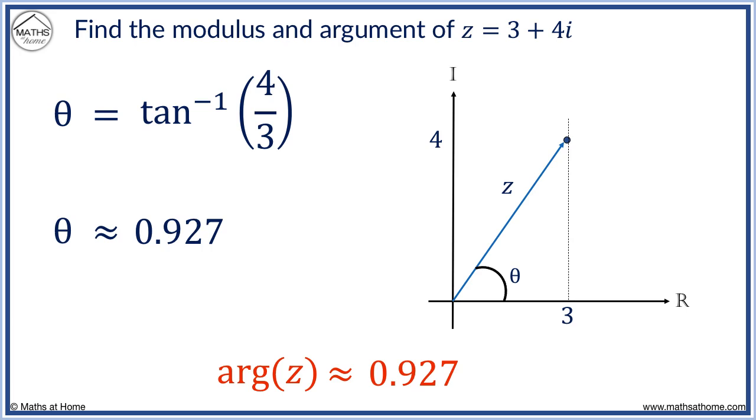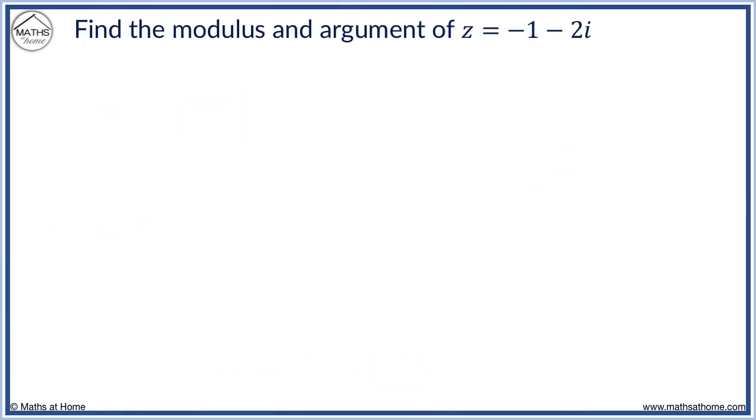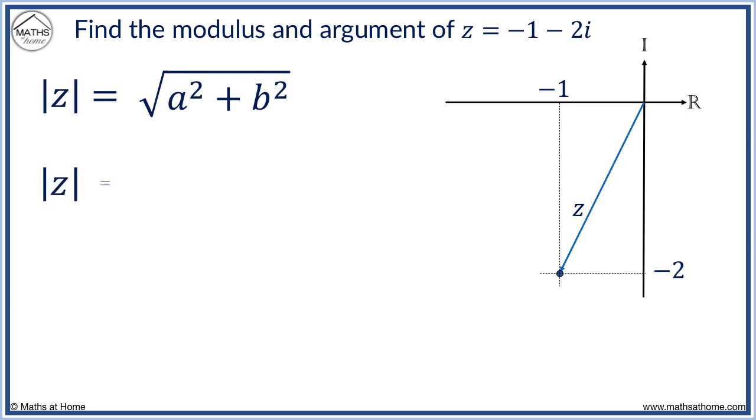We will consider the example z equals minus 1 minus 2i shown here. The modulus is calculated with a equals minus 1 and b equals minus 2. Minus 1 squared plus minus 2 squared equals 5. The modulus is the square root of 5.